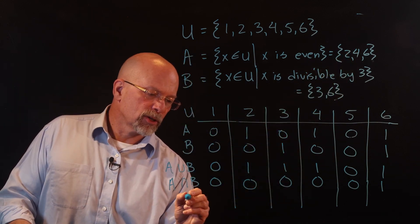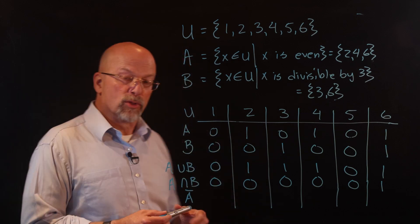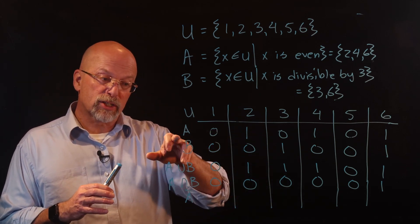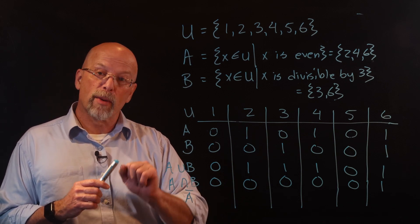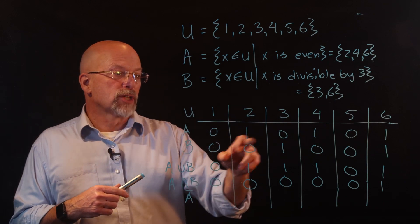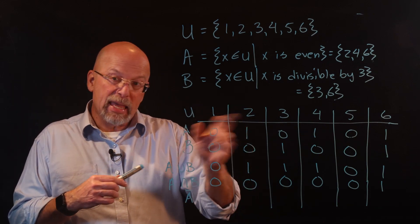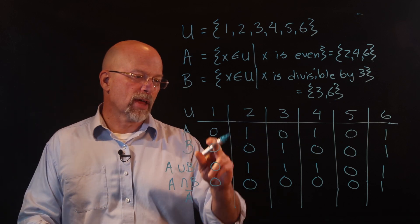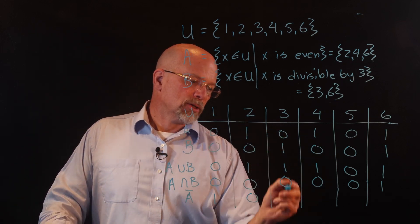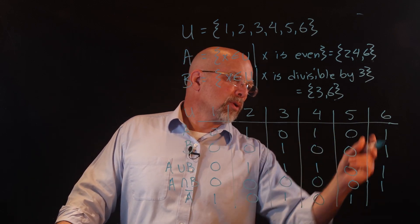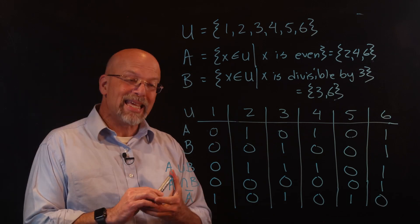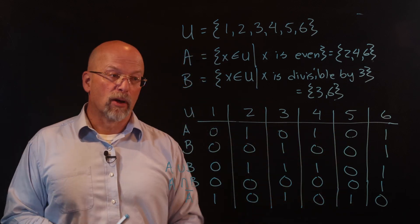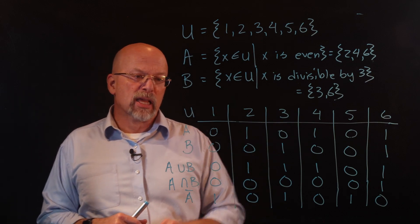What if we want to figure out what A-bar — the complement of A — equals? All you have to do is flip the bits: where there's a zero in the ordered collection representing A, it becomes a one in the complement, and where there's a one it becomes a zero. So ones and zeros flip across all positions, and we see that the complement of A contains {1, 3, 5}. All these operations exist inside the machine.